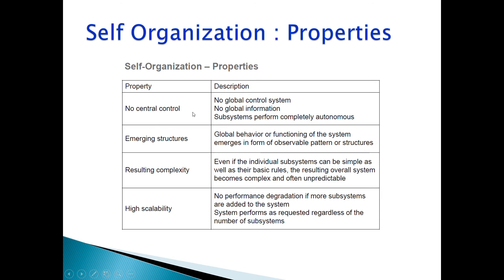No central control means no global control, no global information — subsystems perform completely autonomously. Emerging structures: global behavior or functioning of the system emerges in the form of observable patterns or structures. Resulting complexity: even if individual subsystems and their basic rules are simple, the resulting overall system becomes complex and often unpredictable.